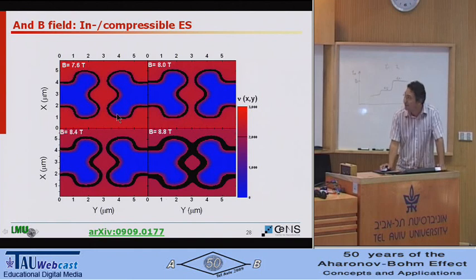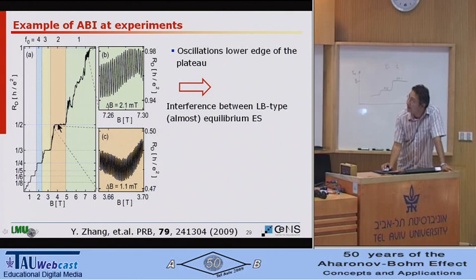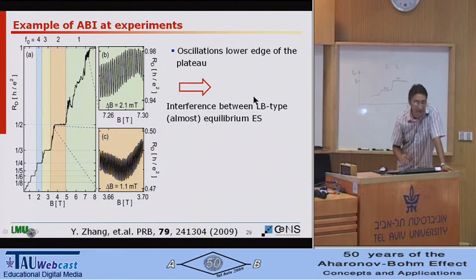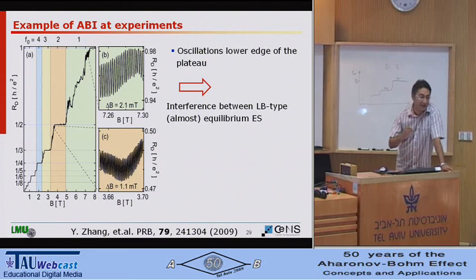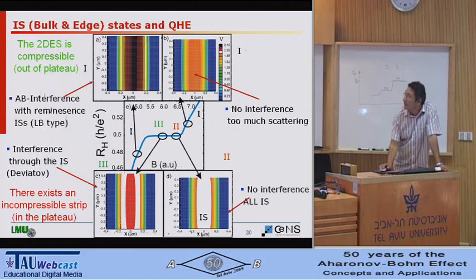This is what I claimed a couple of years ago. And this is essentially what also Bernd told, that you have the plateau here, you have the interference here. You have the plateau here, you have the interference there. And that means the interference is really between the Landauer-Büttiker type, almost equilibrium edge states. I say type because they're not really one-dimensional channels without any scattering. These are very narrow channels, which is a compressible state, which carries the current at equilibrium or almost equilibrium.